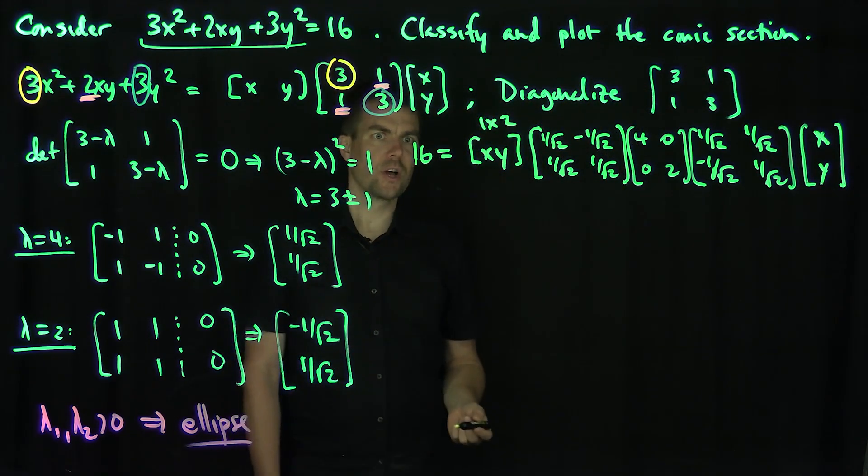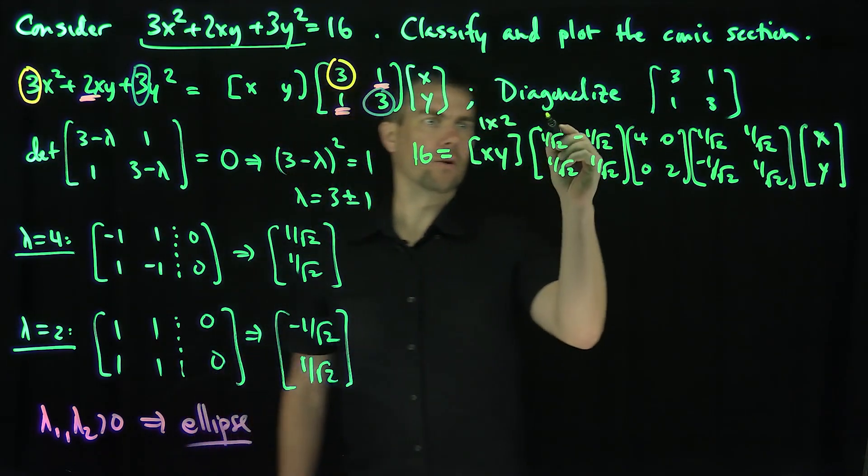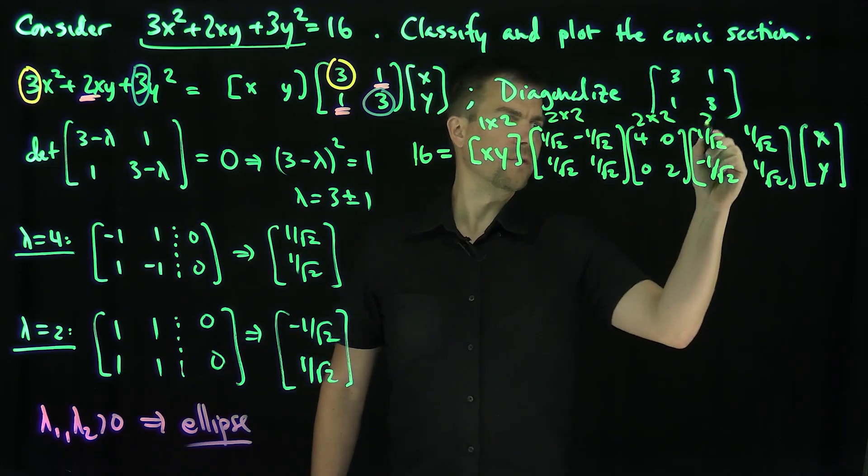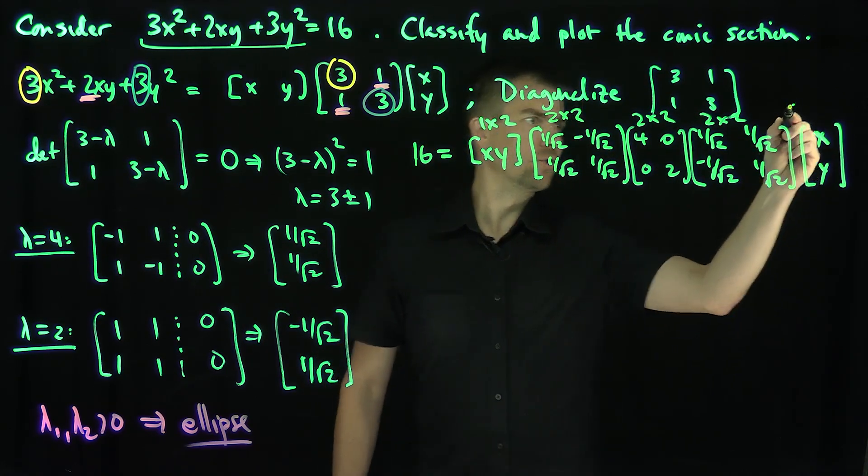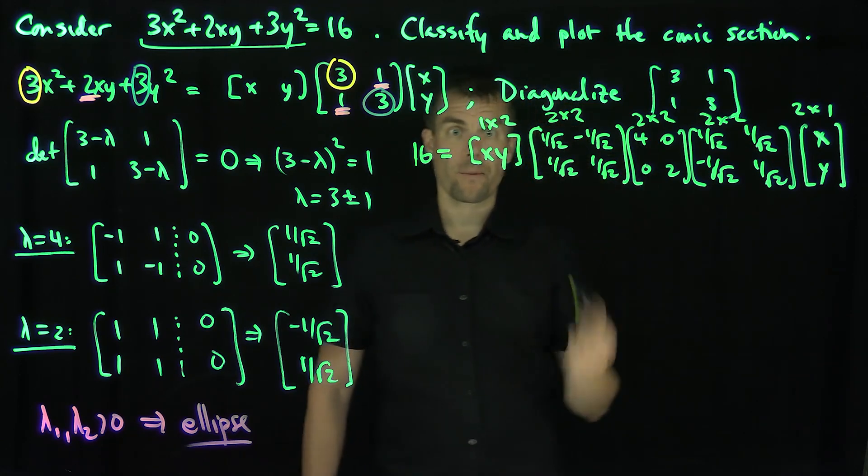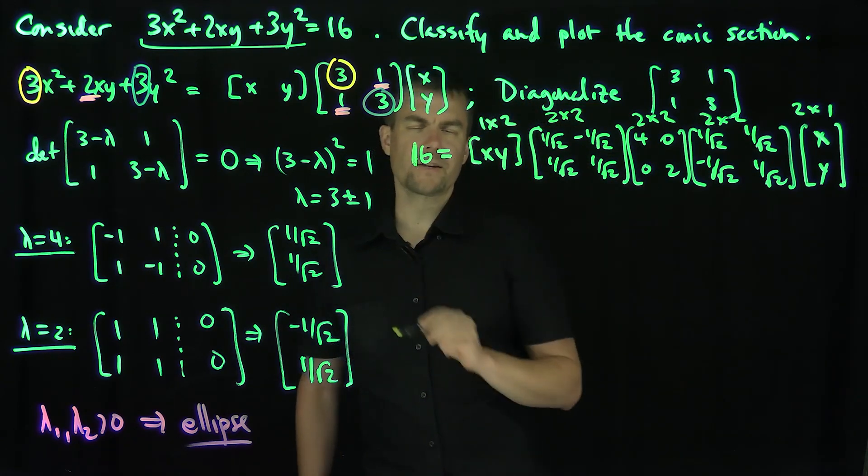So that's our equation. You might say, why did we do something so complicated? This is a 2×2, this is a 2×2, this is a 2×2, and this is a 2×1. So the ultimate result is going to be a 1×1, which is the number 16.